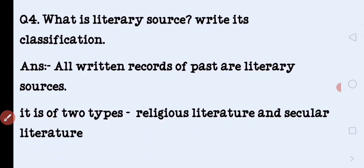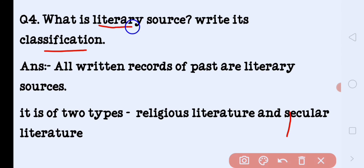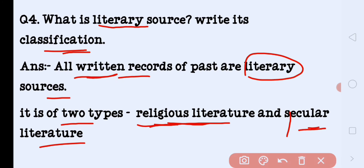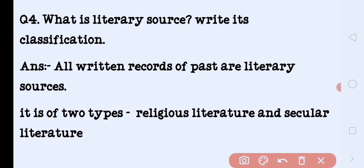What are literary sources? Write their classification. Written records of the past are literary sources — jo bhi purane samay ke records hain aur woh written hain. Literary sources are of two types: religious literature — such as Mahabharata, Ramayana, Puranas, Vedas — and secular literature, which includes biographies of kings, autobiographies, and accounts of administration and kingdoms, not related to religion.